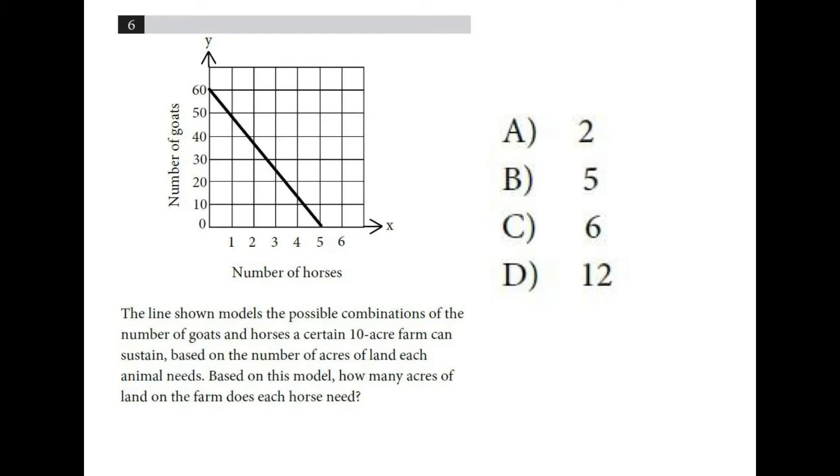So this graph shows the possible combinations of goats and horses. So this point is when I have 0 horses and 60 goats and this point is when I have 0 goats and 5 horses. Since we're looking at a 10-acre farm and at the very most we would have 5 horses, they need 2 acres each. 10 divided by 5.